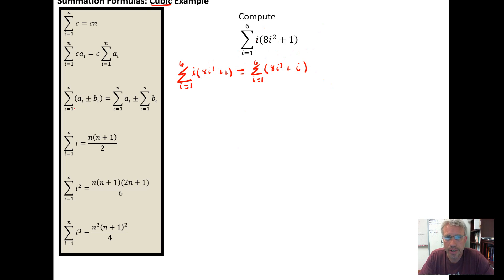I want to recognize that I can use this summation formula where if I have the summation of a sum or difference of two index terms, I can break them apart into individual summations. So I'm going to rewrite this as the sum from i equal 1 to 6 of 8i³ plus the sum from i equal 1 to 6 of i.